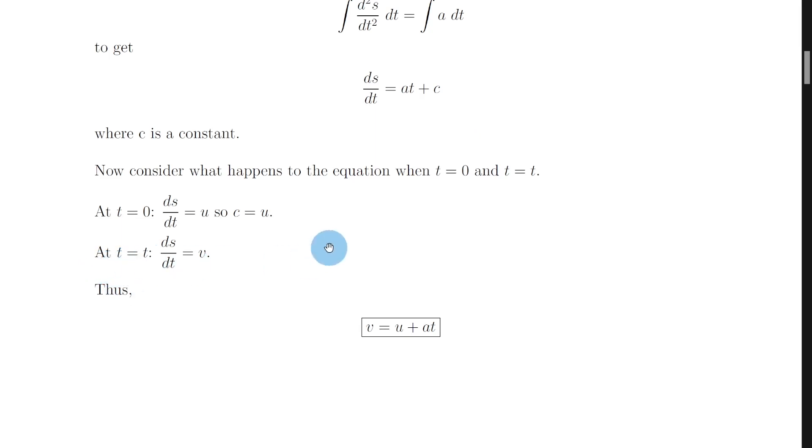And at a time t equals t, which is just a time which is not equal to zero at some point during the motion, we can say that we're going to have final velocity v. So we can say that ds by dt in this case is equal to v. And the reason we're talking about ds by dt being a velocity is because remember you've got an equation on the relationship sheet which tells you that v is equal to ds by dt, i.e. velocity is equal to the rate of change of the displacement.